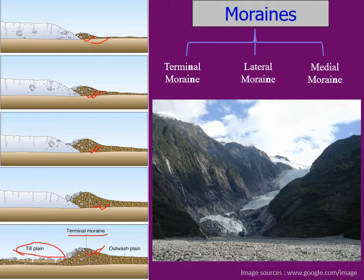The second moraine is known as medial moraine — that is when two glacial ice masses meet each other and form deposition due to merging of the two glacier ice masses. These kinds of moraines are found deposited in between the two glaciers and are known as medial moraines.